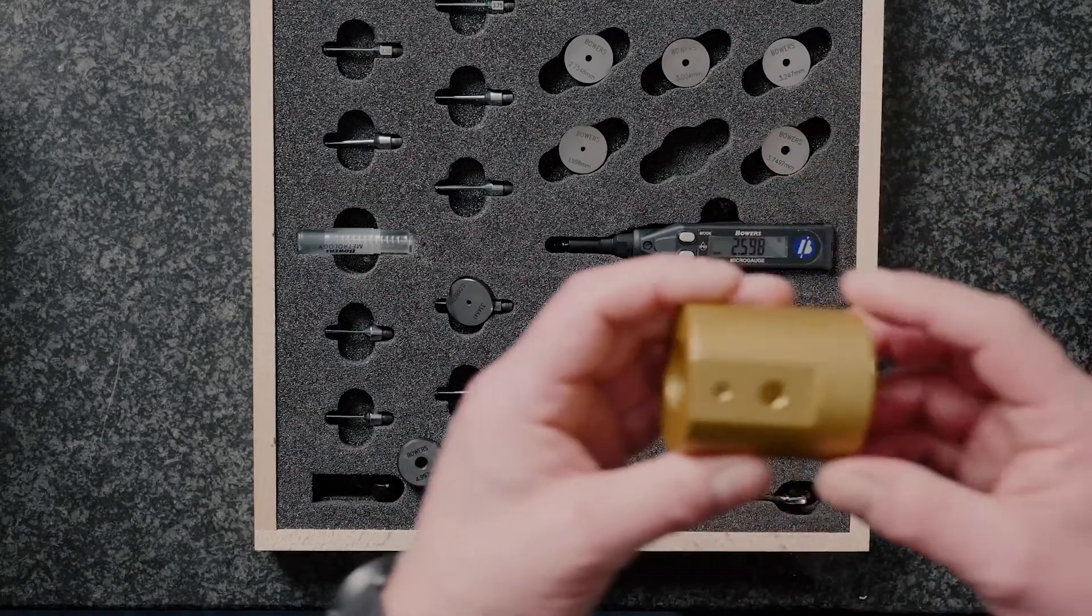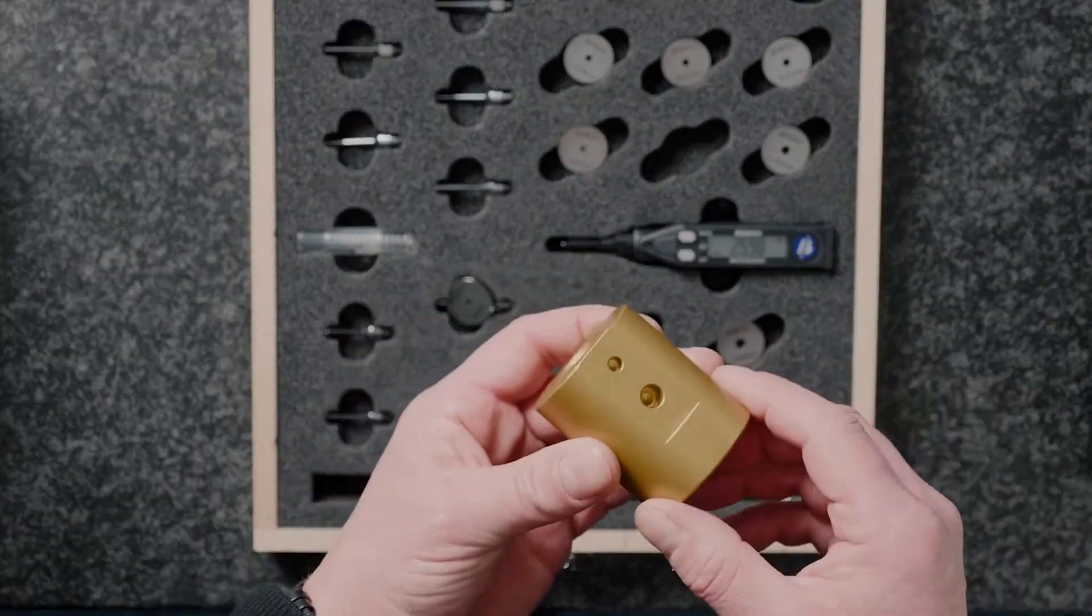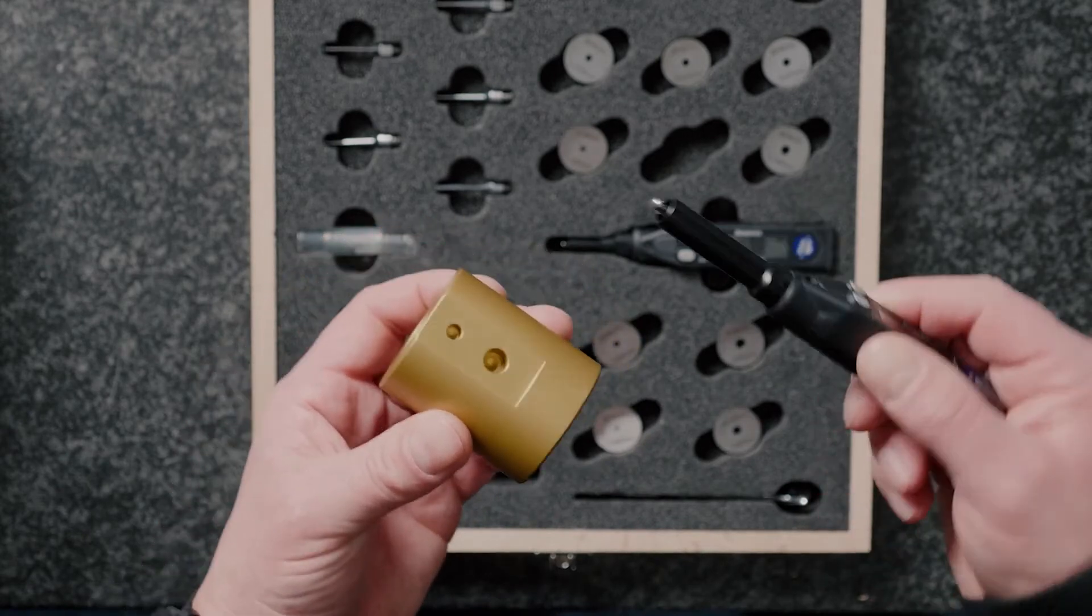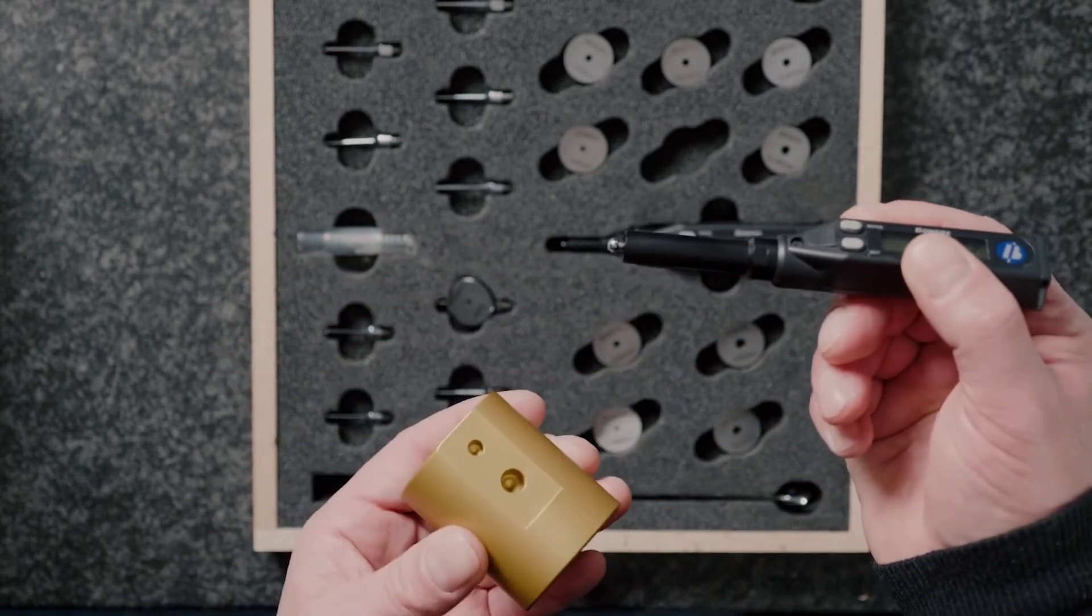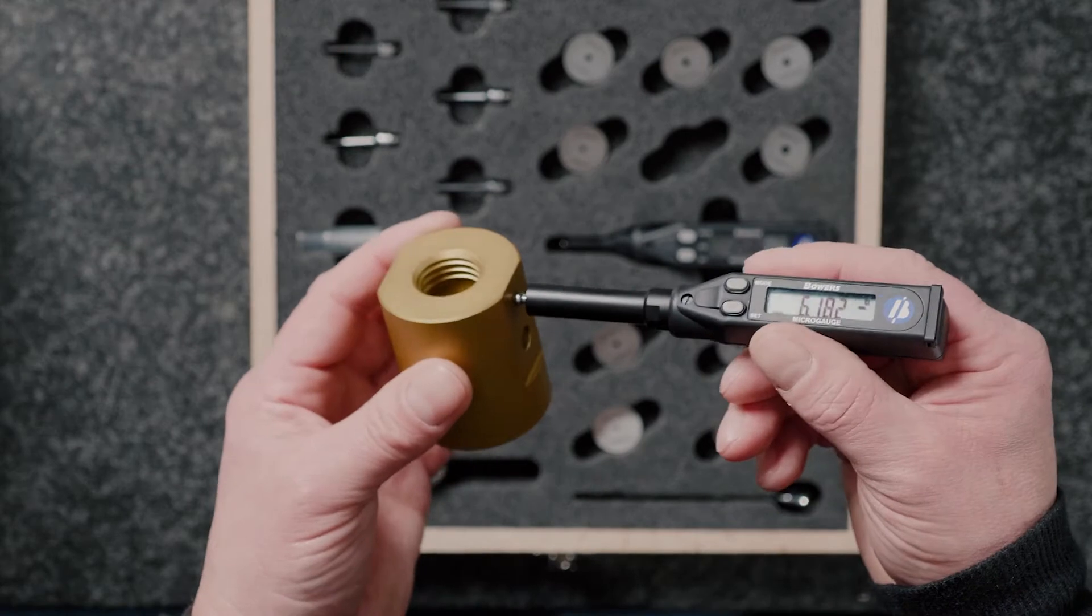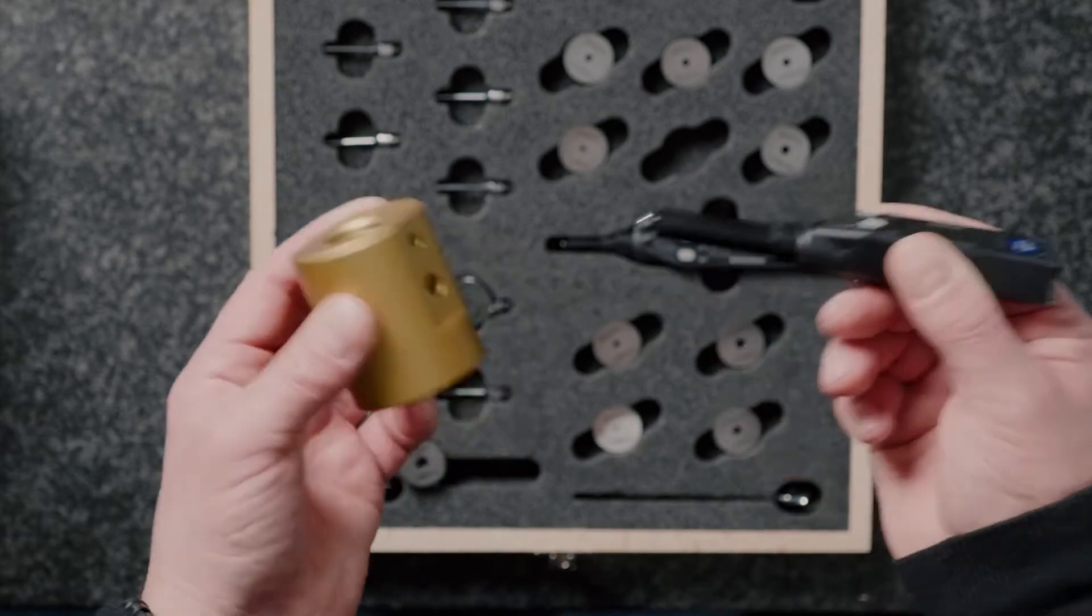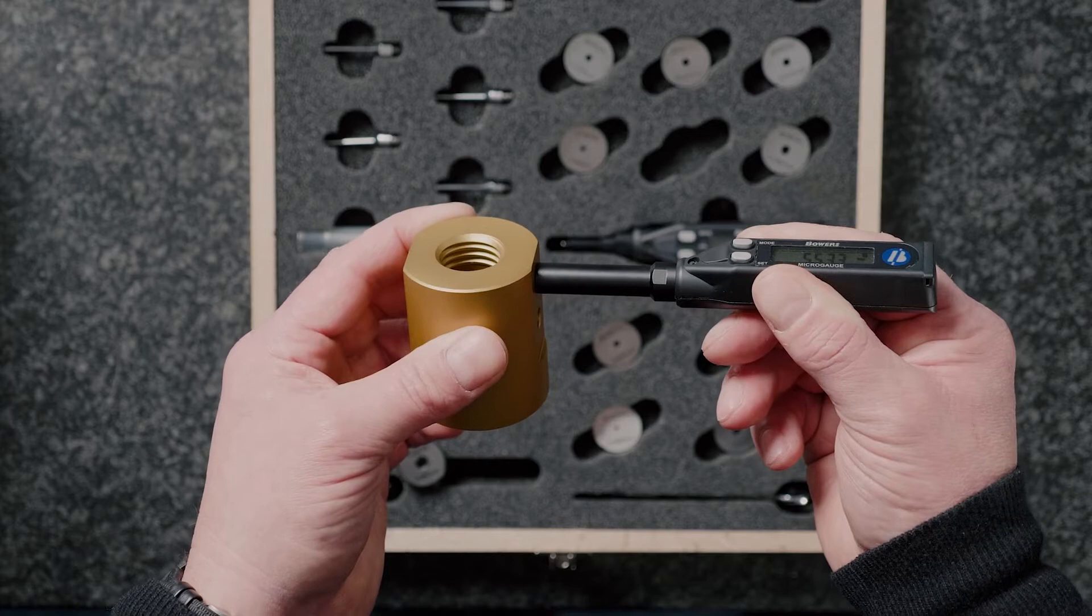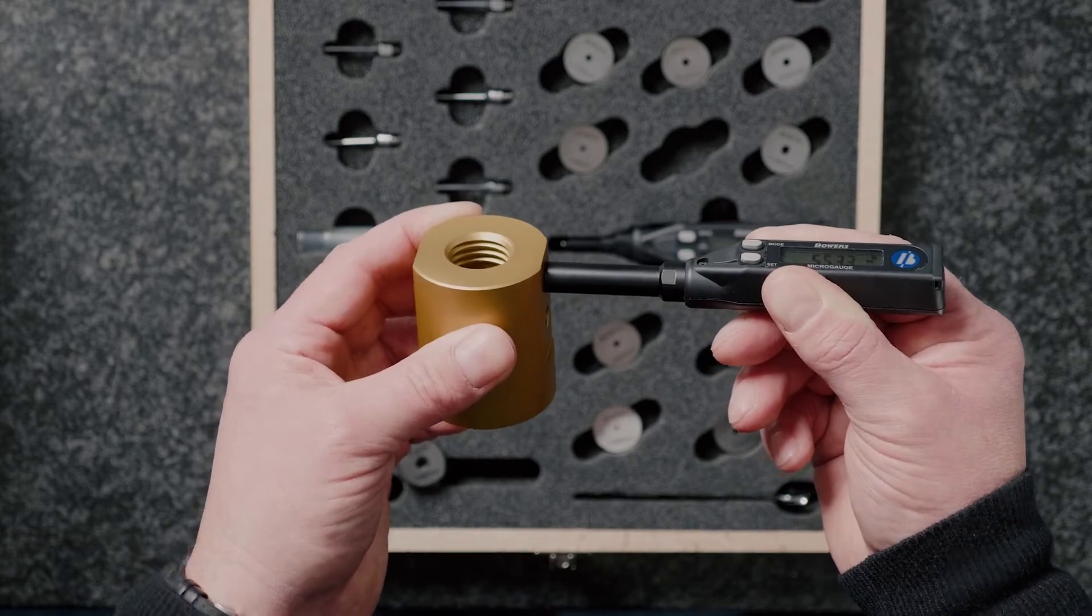So for bores which are machined square to a face, we can use the depth stop that's supplied in the set to act as a square registration so that the gauge is nicely squared up and we get a very repeatable reading.